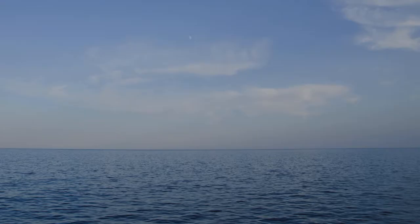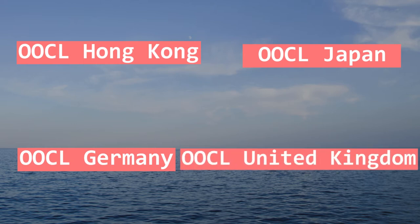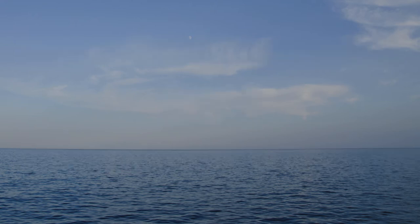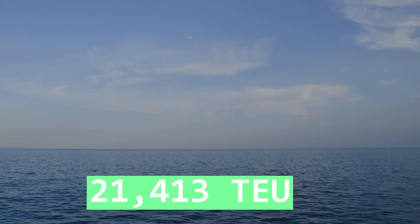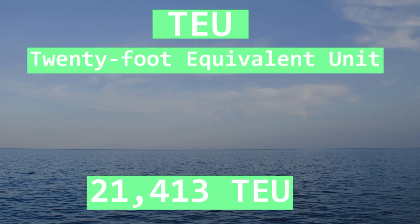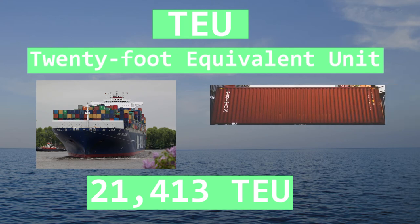Currently the largest container ships in the world are the OOCL Hong Kong, OOCL Germany, OOCL Japan, and the OOCL United Kingdom. All these ships are the same size and are made by the same company, OOCL. They are about 400 meters long and 59 meters wide at their widest point, with a capacity of 21,413 TEU. TEU stands for 20-foot equivalent unit — an inexact unit used to measure the capacity of a cargo ship, essentially the number of 20-foot ISO standard shipping containers it can carry.